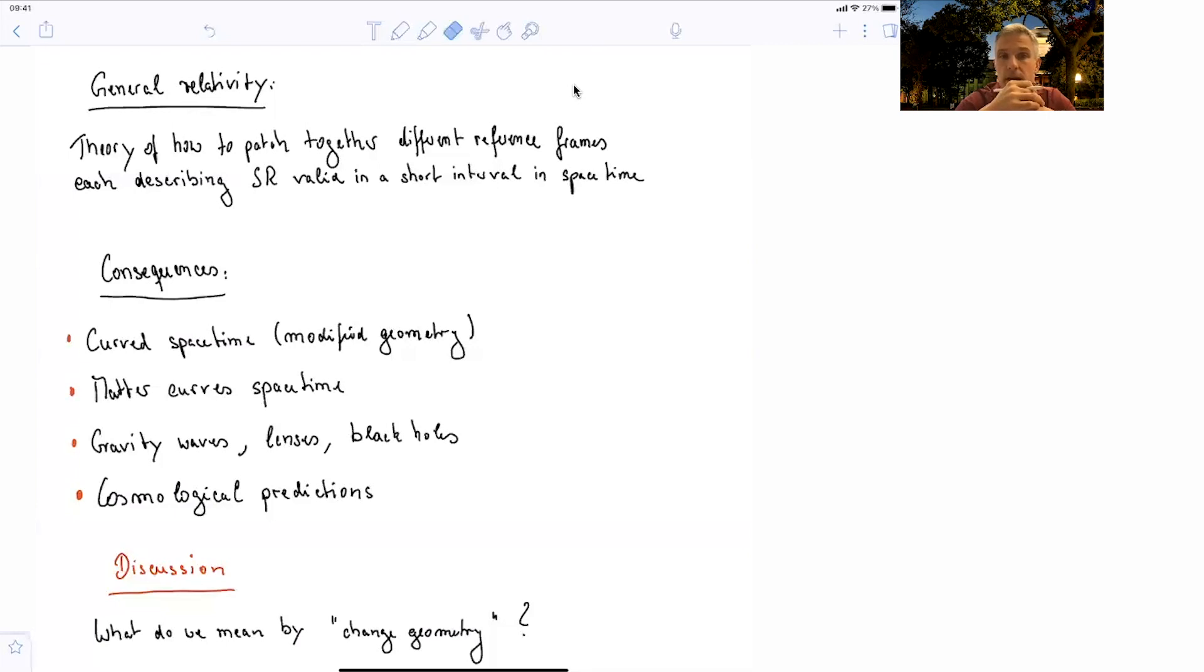Consequences of general relativity are that space time is curved, so we have modified geometries. We learned that because of gravitational effects, matter curves space time. As a consequence, there must be modification of gravity based on matter distributions, and there must also be gravitational waves, gravitational lenses which bend light, black holes, and cosmological predictions coming out of general relativity.